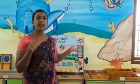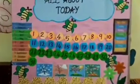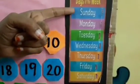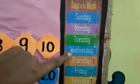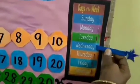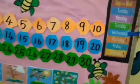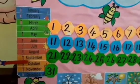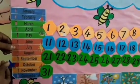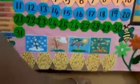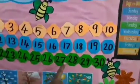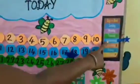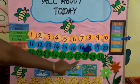Welcome to today's session. Let's know about today. What is the day? Today is Wednesday. Where is Wednesday? Find out. Very good, it's here. And what is the name of this month? What is the month? This month is October. Where is October? Find out. This month is October. And what is the date? The date is 28. So, the day is Wednesday, the month is October, and the date is 28.